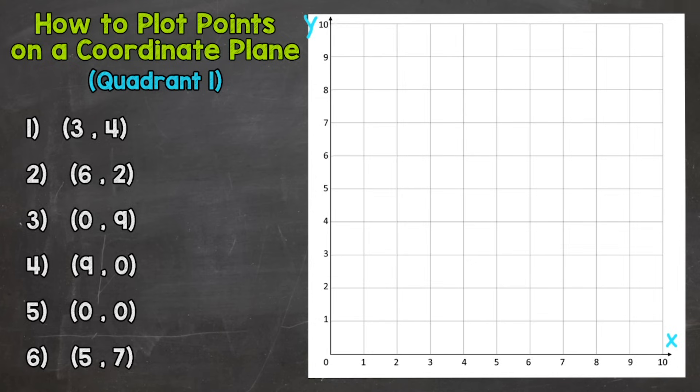So let's hop right in to number one. For number one we have (3, 4), that's our ordered pair. And our first number, that 3, the first number is always going to be your x-coordinate. And the second number, that 4, the second number is always going to be your y-coordinate.